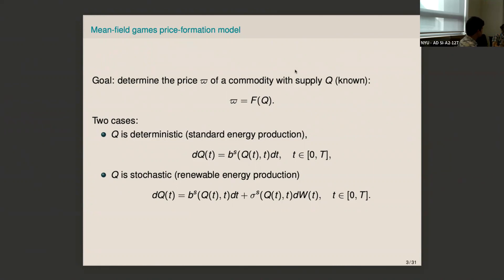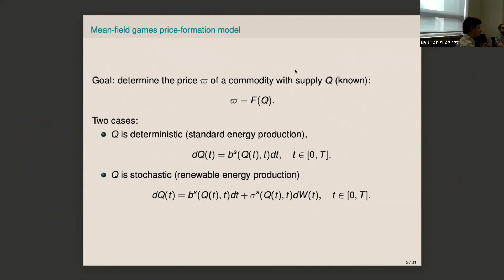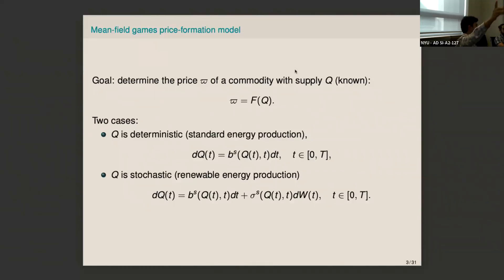For the deterministic case, think of standard energy production: you burn coal, you know how much energy you get. For the stochastic case, think of renewables — solar panels where weather conditions give stochasticity. You can consider different sources of noise: jumps, Poisson processes; here we just take Brownian motion. About 90% of the talk is about the deterministic case; the last slide on common noise corresponds to the stochastic case.